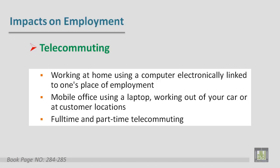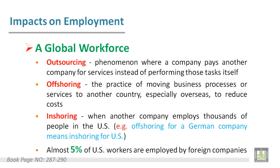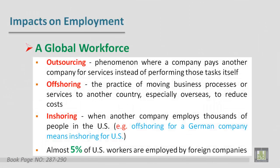There are advantages and disadvantages for telecommuting, which you can find in the book on pages 284 and 285. Also, regarding the global workforce, there is outsourcing — a phenomenon where a company pays another company for services instead of performing those tasks itself — and offshoring, the practice of moving business processes or services to another country, especially overseas, to reduce costs. The opposite is insourcing, where another company employs thousands of people in a country different from your own.